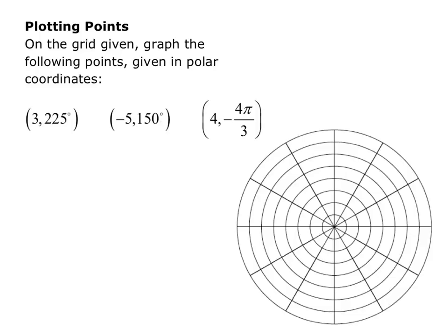Plotting points. On the grid given, graph the following points given in polar coordinates. We have the points (3, 225°), (-5, 150°), and (4, -4π/3) radians.